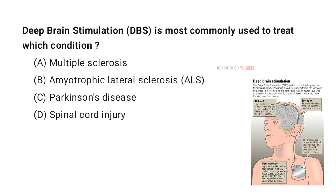Deep Brain Stimulation (DBS) is most commonly used to treat which condition? A. Multiple Sclerosis, B. Amyotrophic Lateral Sclerosis (ALS), C. Parkinson's disease, D. Spinal Cord Injury. And the correct answer is C. Parkinson's disease.